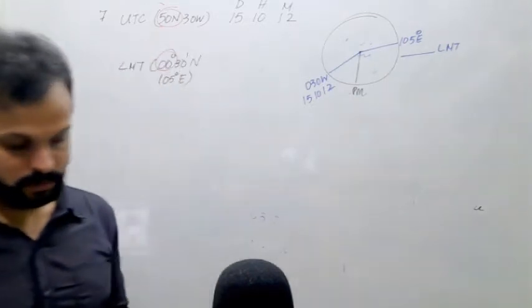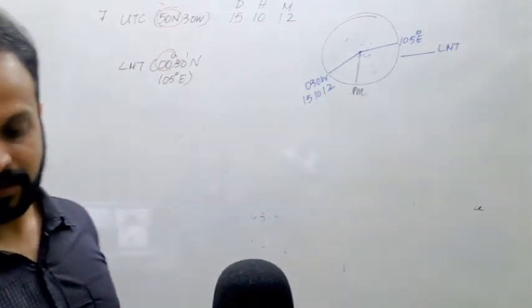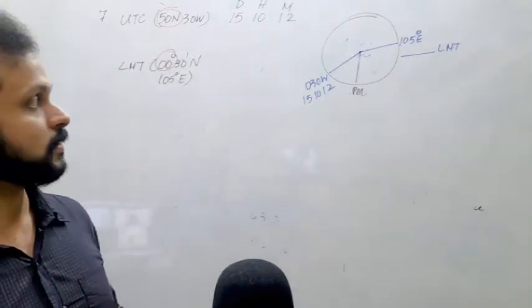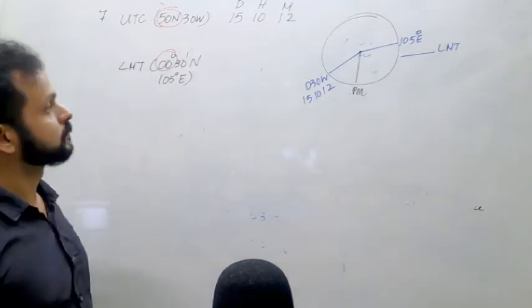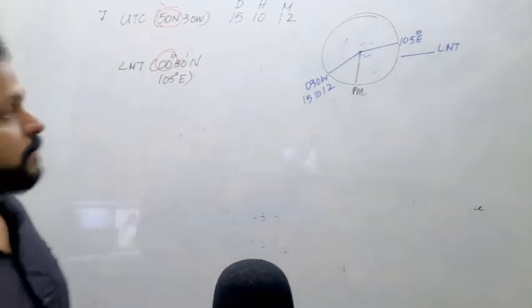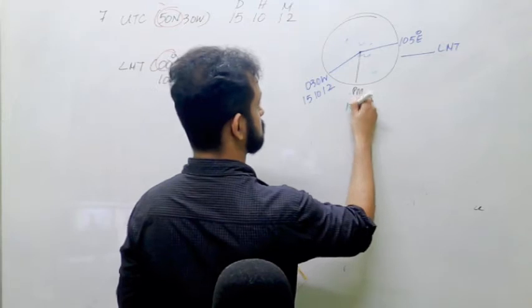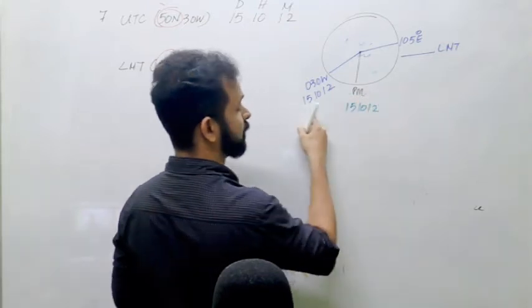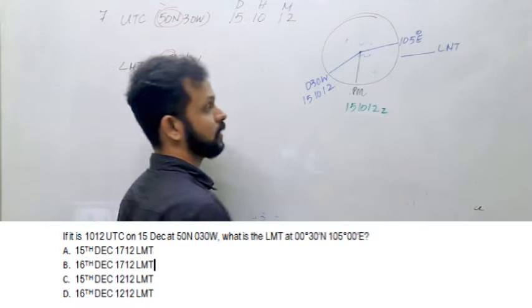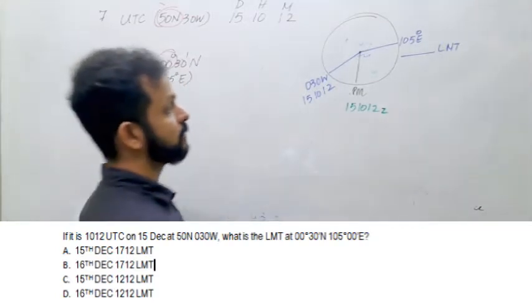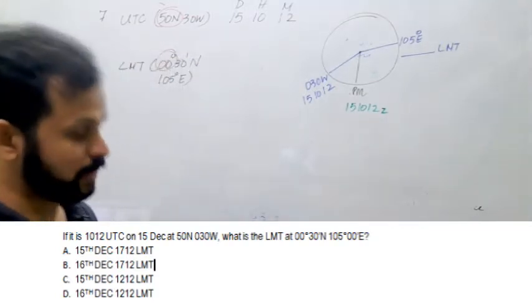Tell me how will you find out? It is 1012 UTC which is 1012 LMT at 0 degrees. Exactly. So you can directly transfer this without any conversion straight to the Greenwich Meridian and then from there. What is the after that conversion?